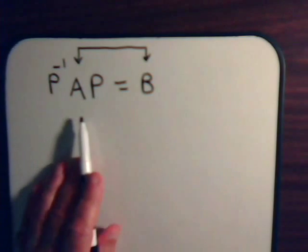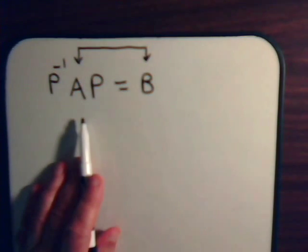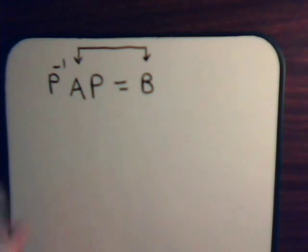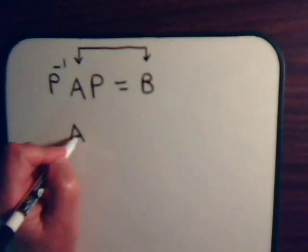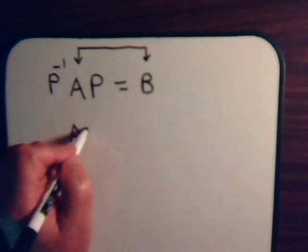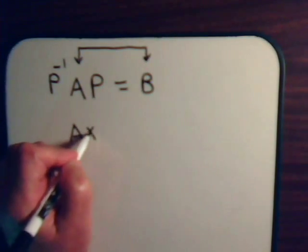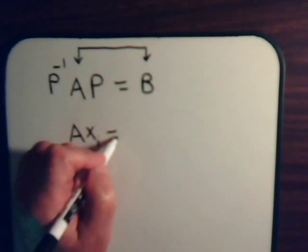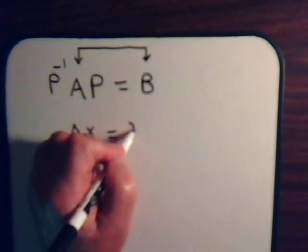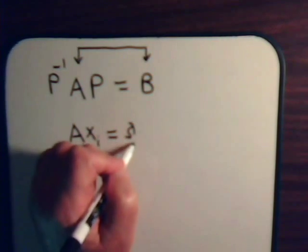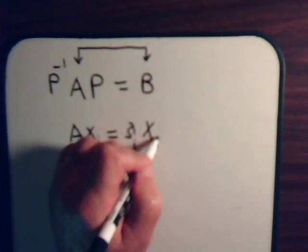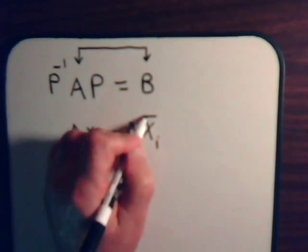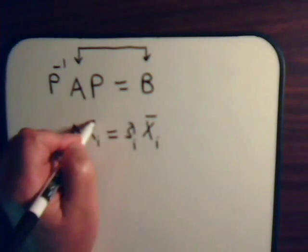Now let's talk about matrix A and its eigenvectors. Say we have A x_i equals lambda_i x_i, where x_i and lambda_i are the eigenvector and eigenvalue respectively.